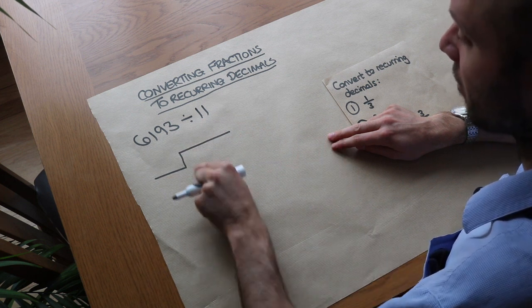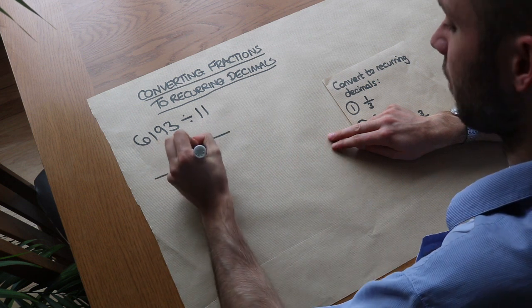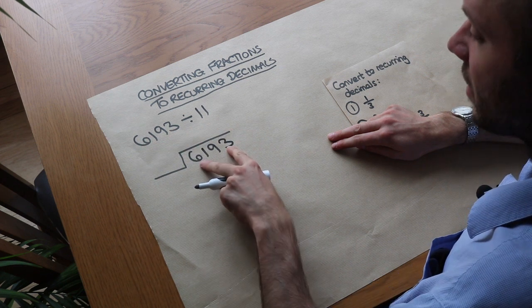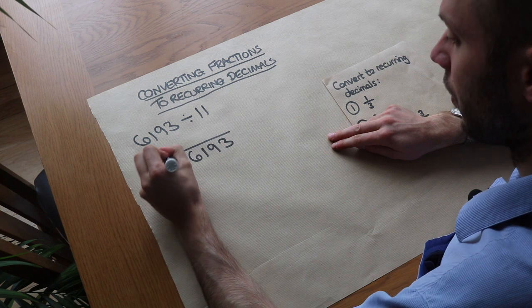Sometimes known as a bus stop method because this looks a bit like a bus stop. Does it? I'm not really sure. So we put the number on the right, and the thing we're dividing by on the left.